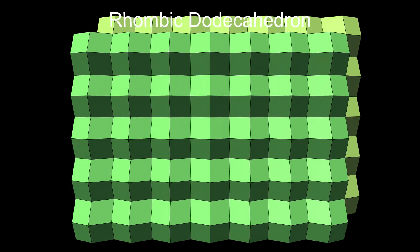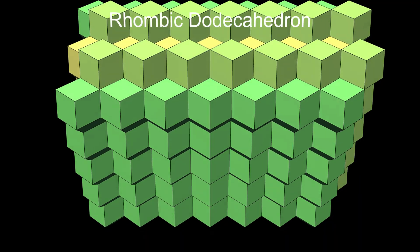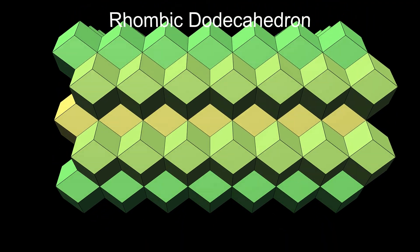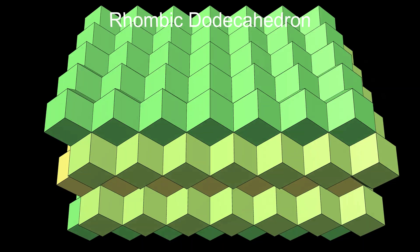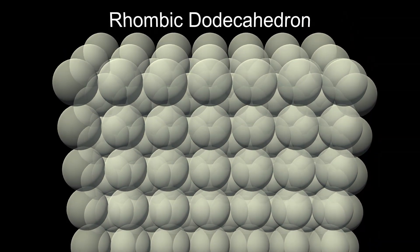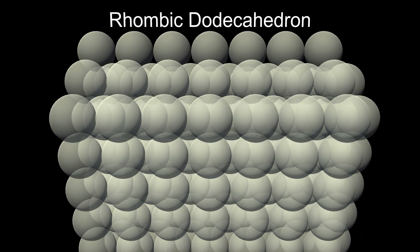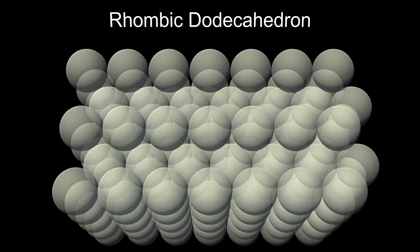This is the rhombic dodecahedron honeycomb. This honeycomb is closely related to the way spheres are often stacked. If you replace each rhombic dodecahedron with a sphere, you get a common stacking of spheres, often seen in piles of fruit or cannonballs.